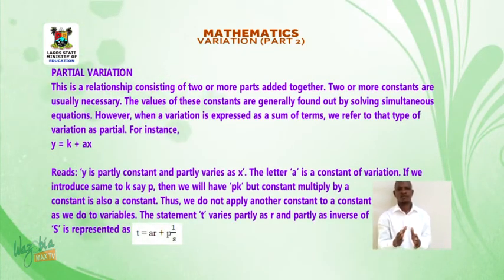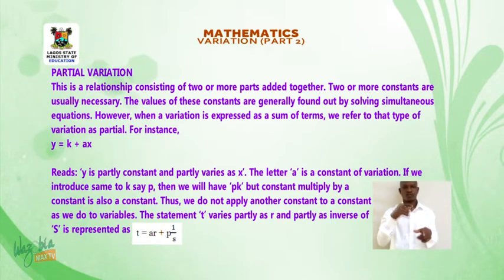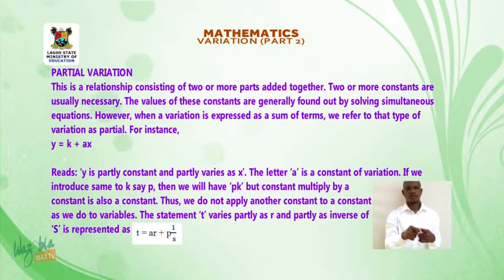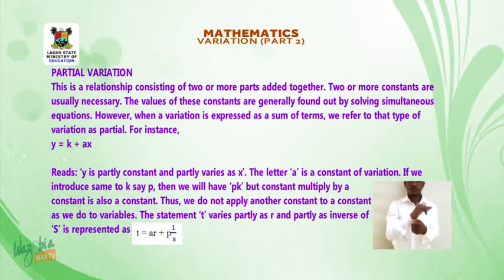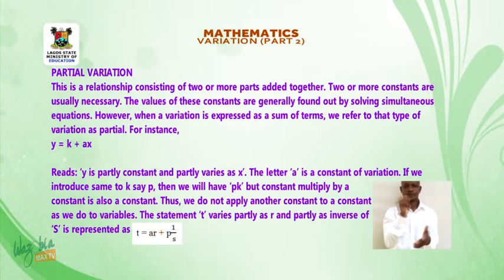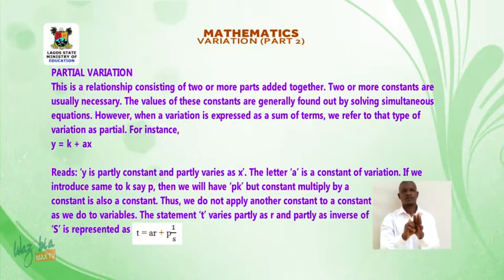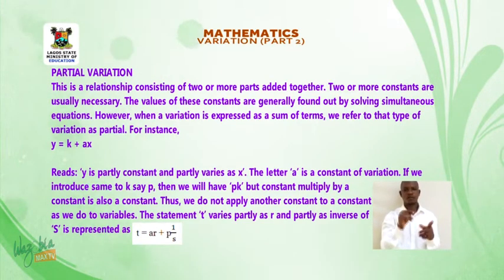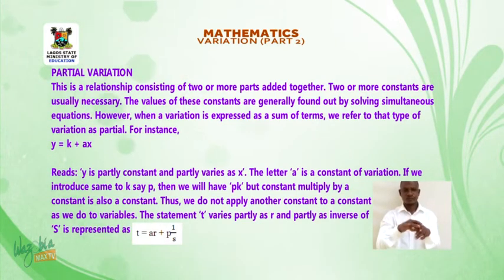Partial variation. This is a relationship consisting of two or more parts added together. Two or more constants are usually necessary. The values of these constants are generally found by solving simultaneous equations. When a variation is expressed as a sum of terms, we refer to that type as partial variation. For instance, y is equal to k plus ax reads: y is partly constant and partly varies as x.